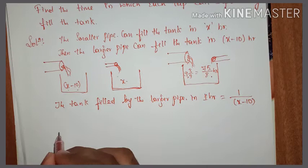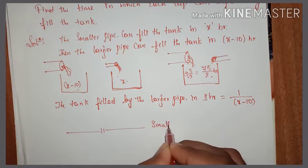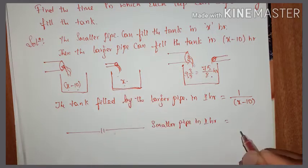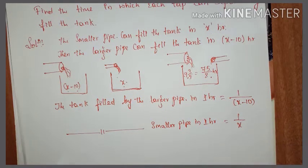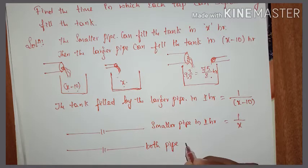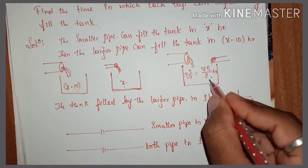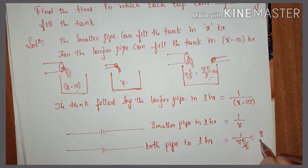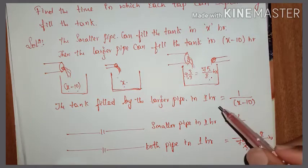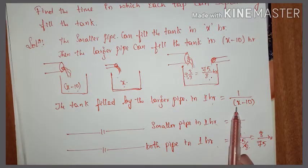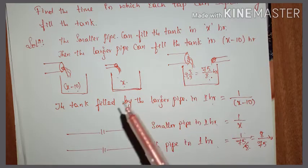Similarly, the tank filled by the smaller pipe in one hour is 1 by x. The tank filled by both pipes together in one hour: total time is 75 by 8 hours, so for one hour it is 1 divided by 75 by 8, which means 8 divided by 75 hours. Now I have converted everything for one hour.